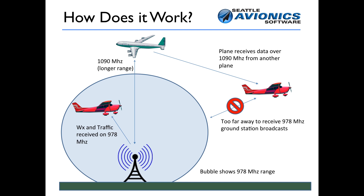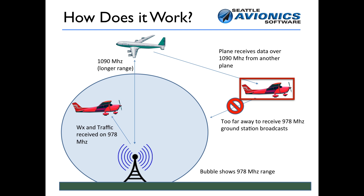How does ADS-B generally work? Let's take two scenarios. In the first one, you're the plane — the red Cessna inside the blue bubble. In that case, you are very close to an ADS-B tower, and you're going to be receiving weather and traffic information on 978 megahertz. In the second scenario, you're too far away from a ground station to receive anything from it.